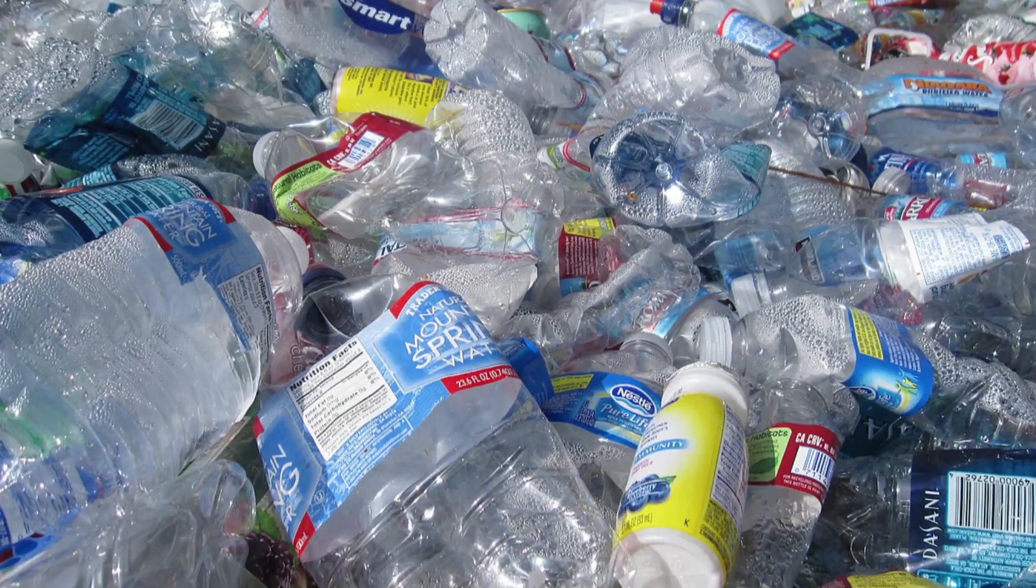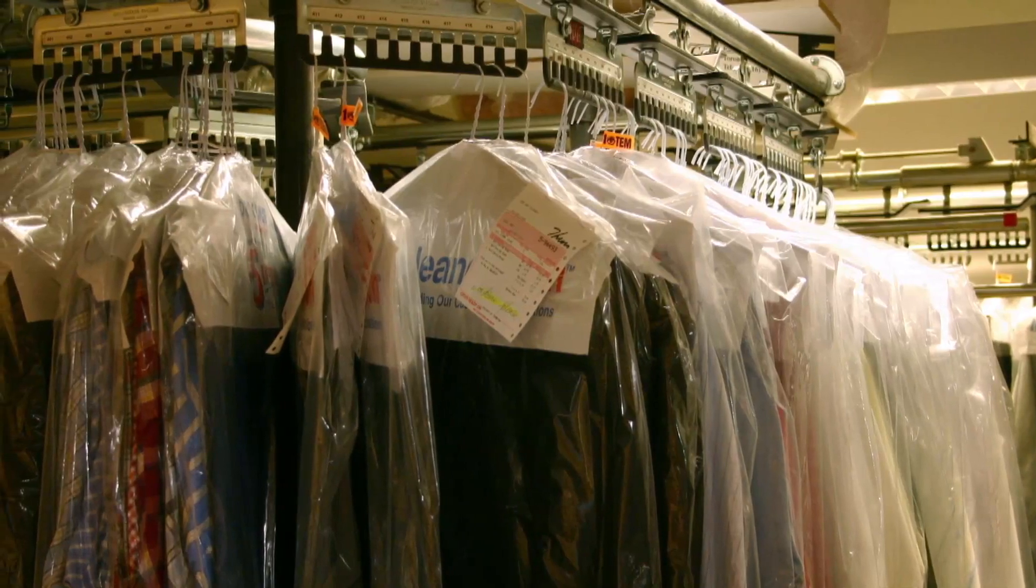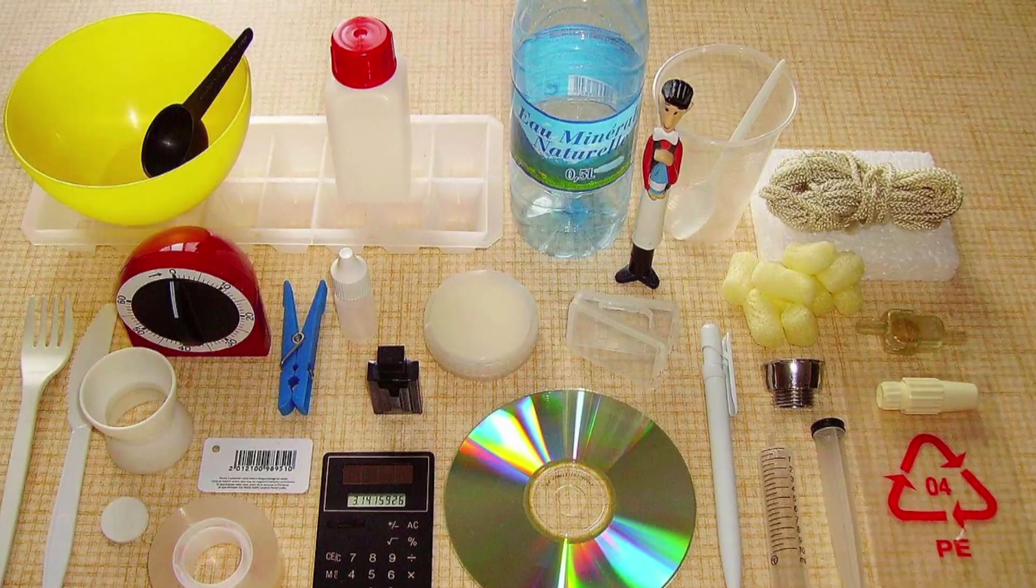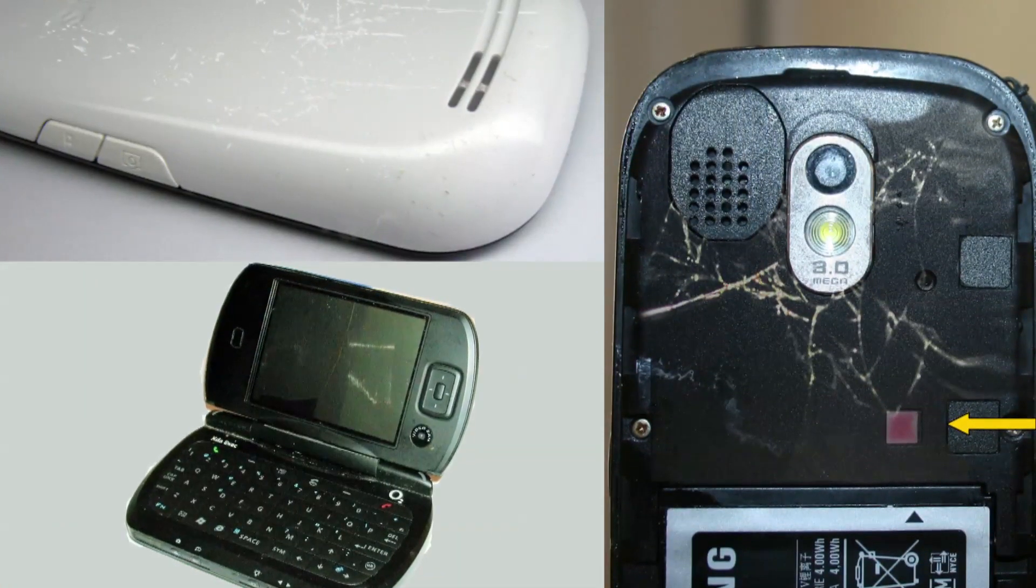Plastics are a ubiquitous part of modern life, showing up in food and drink containers, clothes, plastic bags, and so much more. Plastics have gotten a lot tougher over the years, but as anybody with a banged-up old cell phone in their pocket can tell you, they still scratch and crack with wear.